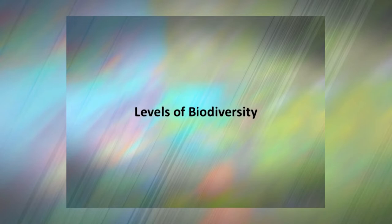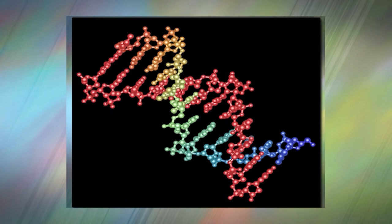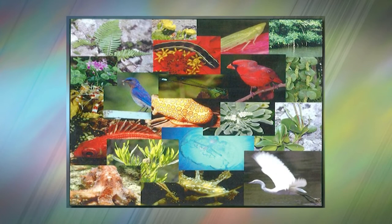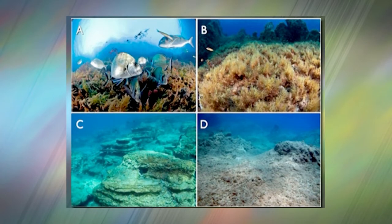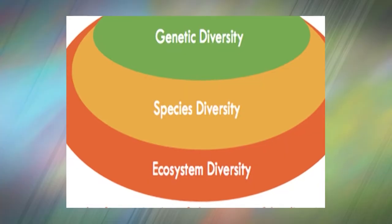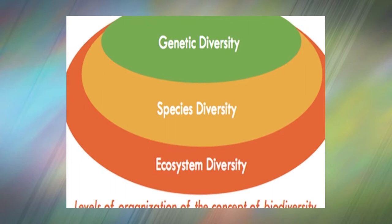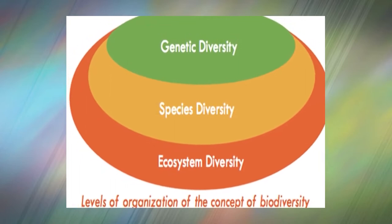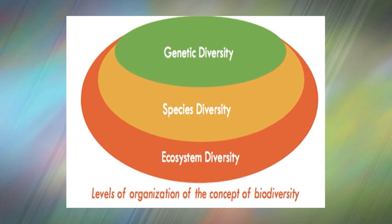Now, the levels of biodiversity. It has become widespread practice to define biodiversity in terms of genes, species and ecosystems, corresponding to three fundamental and hierarchically related levels of biodiversity. Biodiversity may be considered at three levels: genetic diversity, species diversity and ecosystem diversity.